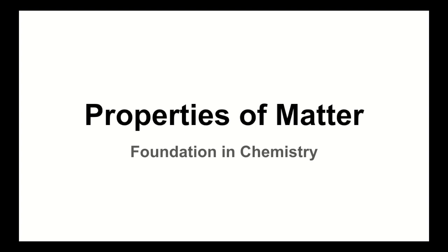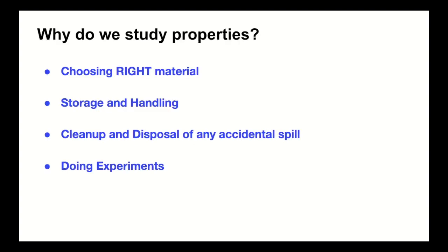Properties of matter basically include traits that can be measured, such as the object's density, its color, mass, volume, malleability, etc. In other words, properties of matter is a description of a particular substance.